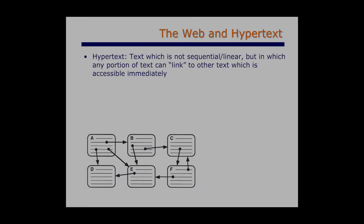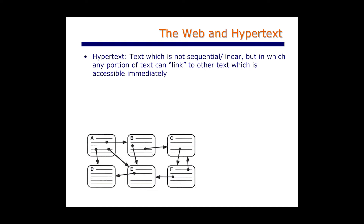So it converted the organization of information from being linear, the way it is in a book, to being like a network, where you could jump from one idea to the other without being constrained by a linear flow. The web is not the only collection of hypertext, but it is by far the largest collection of hypertext that exists and is likely to exist.